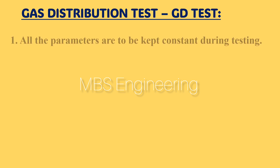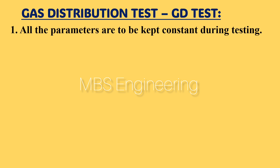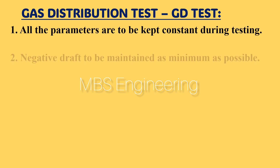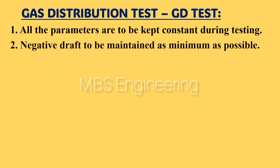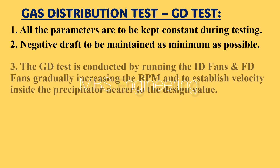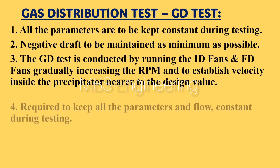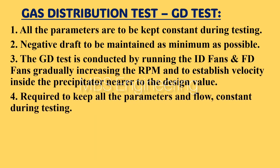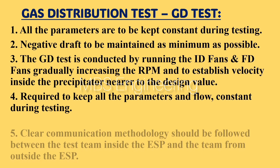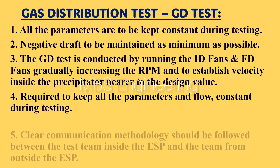GD test procedure: Point 1: all parameters are to be kept constant during testing. Point 2: negative draft is to be maintained as minimum as possible. Point 3: the GD test is conducted by running the ID fans and FD fans, gradually increasing the RPM to establish velocity inside the precipitator nearer to the design value. Point 4: all parameters and flow must be kept constant during testing. Point 5: clear communication methodology should be followed between the test team inside the ESP and the team outside.